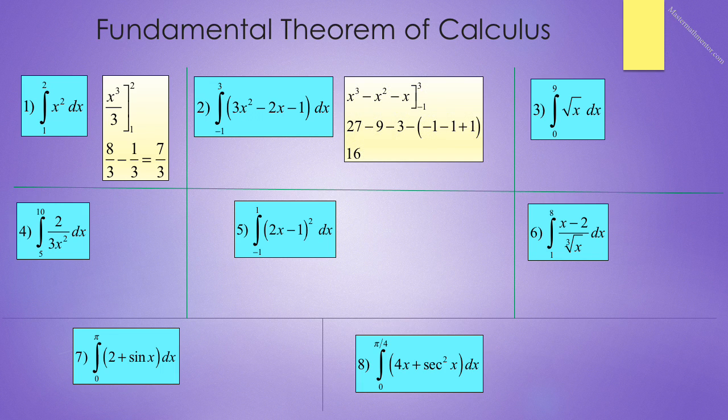Number 2 reads the integral from negative 1 to 3 of 3x squared minus 2x minus 1 dx. We integrate and get x cubed minus x squared minus x evaluated from negative 1 to 3. And we get 27 minus 9 minus 3, minus the quantity negative 1 minus 1 plus 3. Final answer: 16.